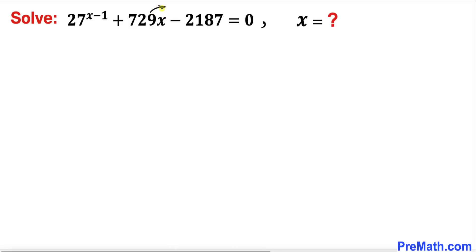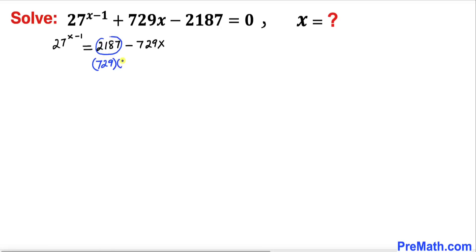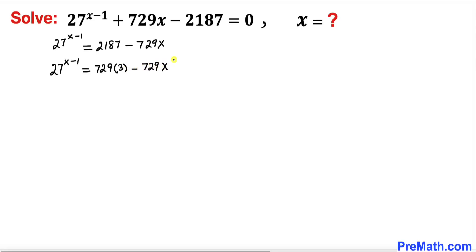The first thing we're going to do is move these two terms to the right hand side. We can see that 2187 can be broken down to 729 times 3. So our equation becomes: 27 to the power x minus 1 equals 729 times 3 minus 729 times x.